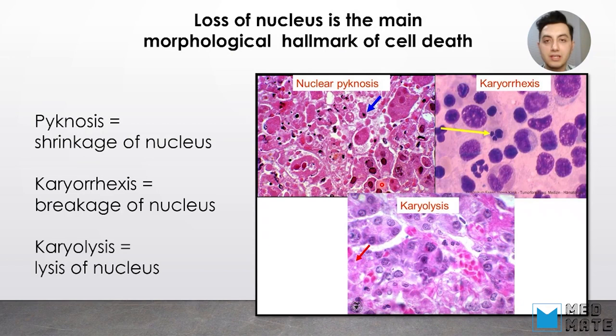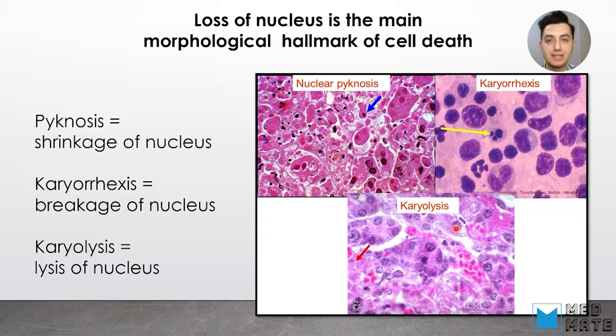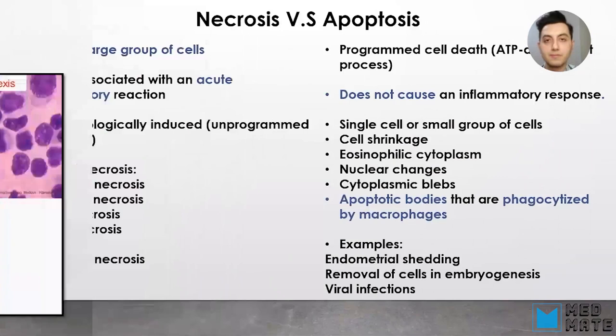When we are talking about cell death, the hallmark is loss of nucleus. Loss of nucleus is the main morphological hallmark of cell death. There are three stages for loss of nucleus. The first is pyknosis — shrinkage of the nucleus when it gets smaller. Then we have karyorrhexis — breakage of the nucleus into smaller parts. And then karyolysis — lysis or destruction, meaning disappearance of the nucleus.